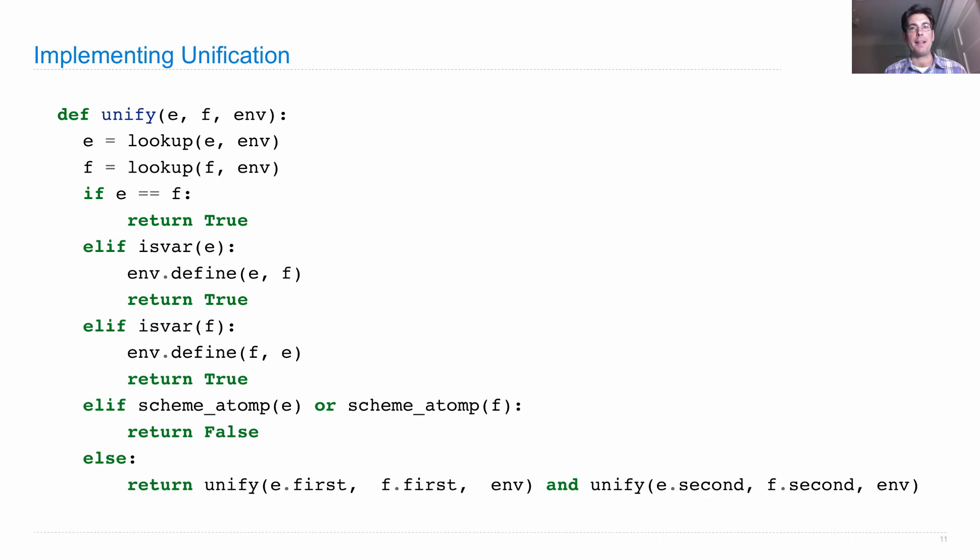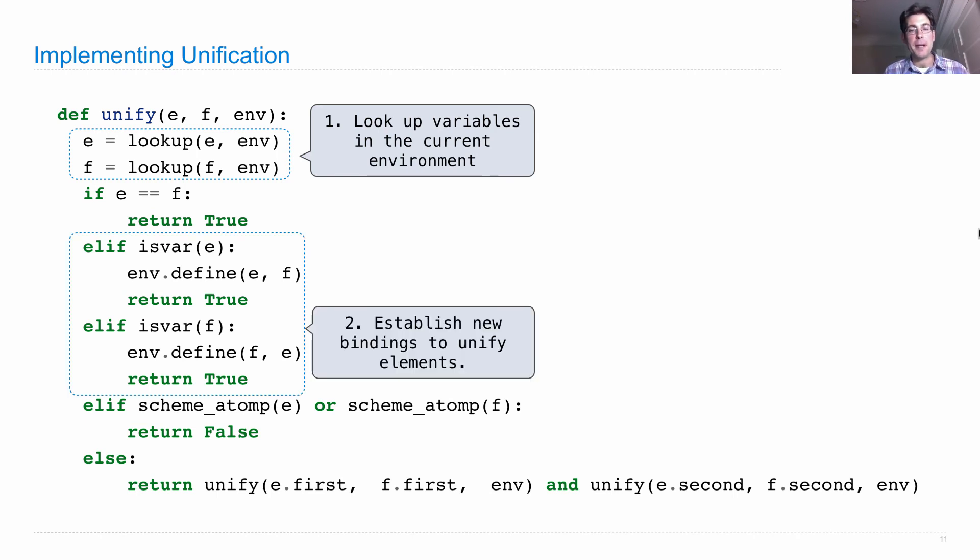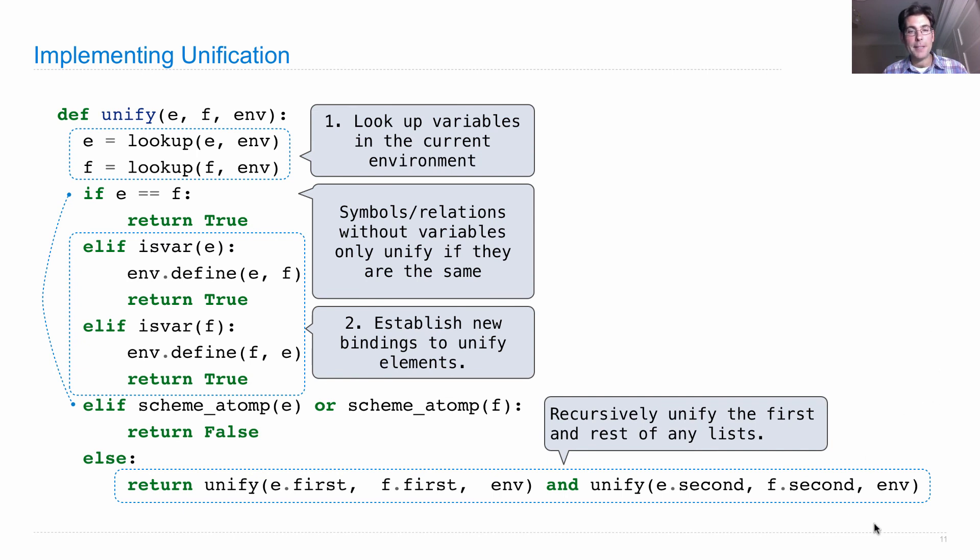Let's look at the implementation of unify, which takes two symbols or relations, e and f, and an environment which has bindings from variables to values. First, we look stuff up. That's step one of what I stated before, look up variables in the current environment. And step two is establish new bindings to unify elements. Now there's more in this implementation. These two cases say that symbols or relations without variables in them only unify if they are the same. And finally, we have to have the part where we recursively unify the first and rest of any lists.